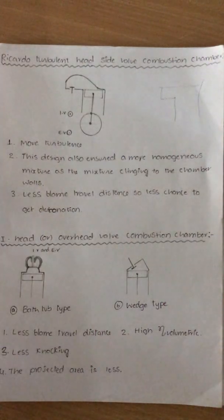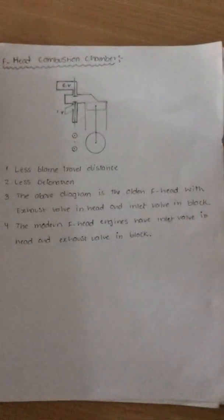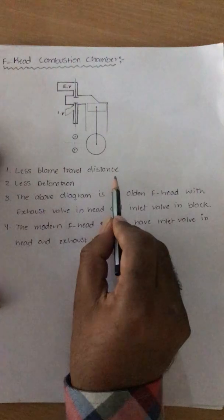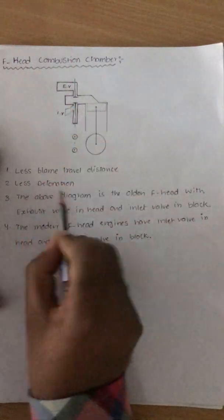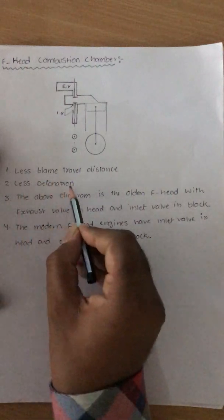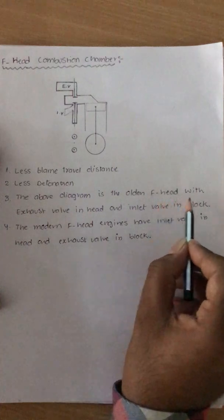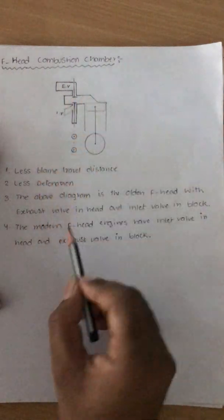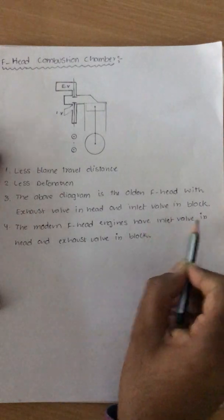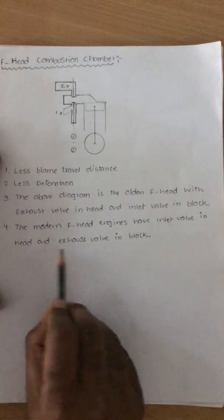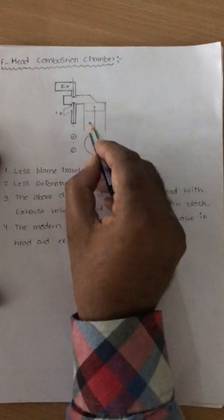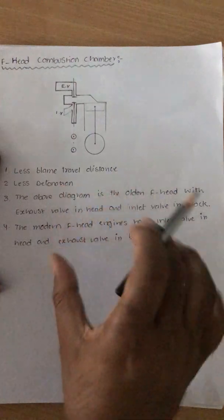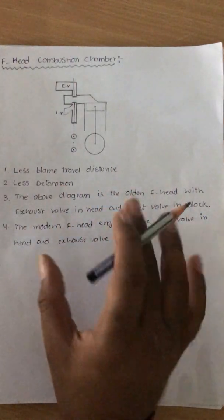The next type is the F-head combustion chamber. The shape itself resembles an F. It offers less flame travel distance and less detonation. In the older F-head design, the exhaust valve is in the head and the inlet valve is in the block. However, modern F-head engines have the reverse arrangement: the inlet valve is in the head and the exhaust valve is in the block. The modern F-head is therefore the reverse of the older type, and this design offers less detonation, less flame travel distance, and is considered the best compromise. Many modern engines use this type of combustion chamber.